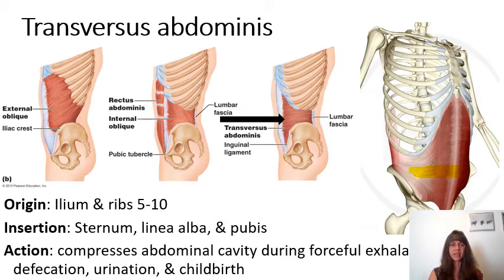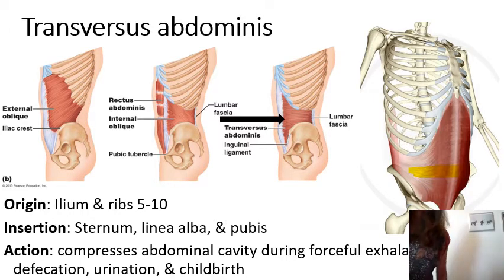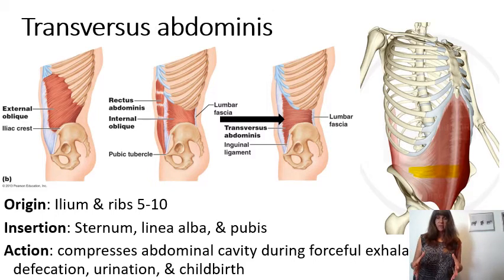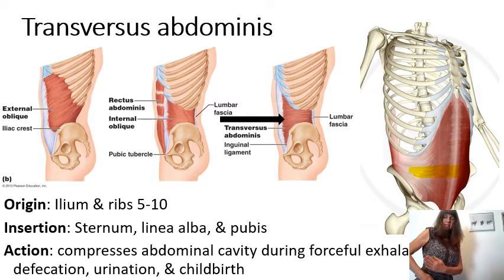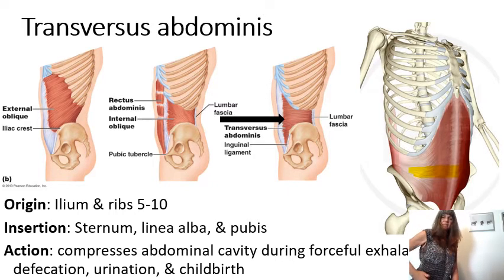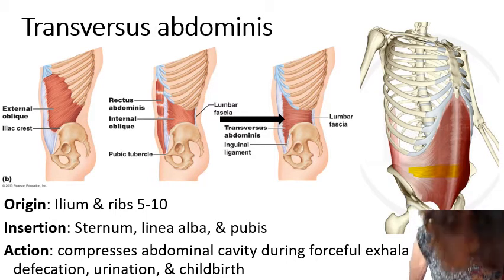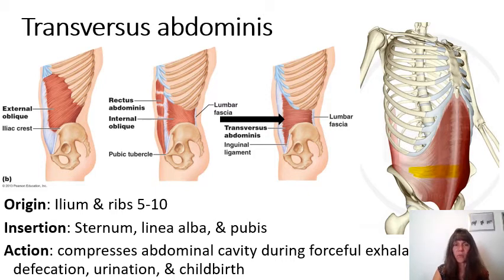One thing to point out for lab: if you pick up the wall of the thorax and place it against your body, the external obliques will run in a pattern we call 'hands in pockets,' because the fibers run in the same direction as when you put your hands in your pockets. The internal obliques run in the opposite direction. If you ran your fingers over the internal obliques in the same direction, you'd get a strange sound as they cross the fibers the wrong way. Transversus abdominis is best seen on the opposite side of the abdominal wall in the lab.